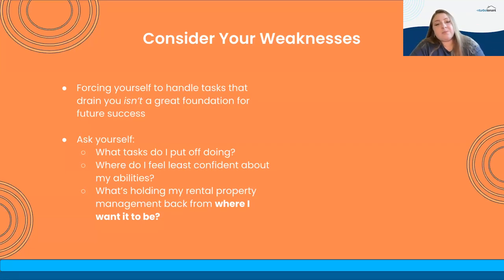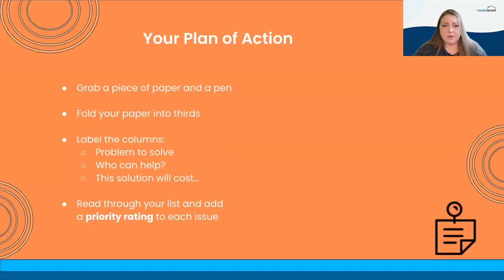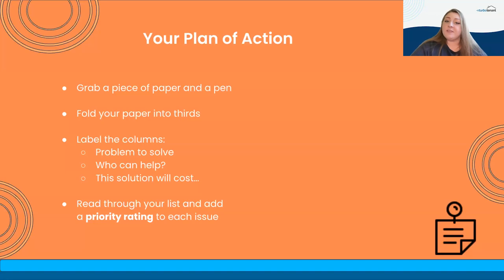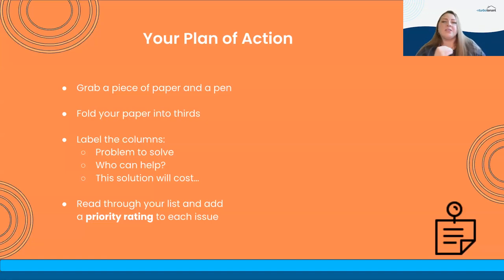Do those pieces come into play when you're considering what's holding you back from where you want your portfolio to be? Once you start asking yourself those questions, I'm a huge fan of pen and paper. If you have a piece of paper or later when you're watching this back, I would recommend grabbing a piece of paper and dividing it into thirds. Label the columns: problem to solve, who can help, and what will the solution cost? Identify line by line the various things that are getting in your way and start doing some pre-planning to understand where they might fall in your plan moving forward.